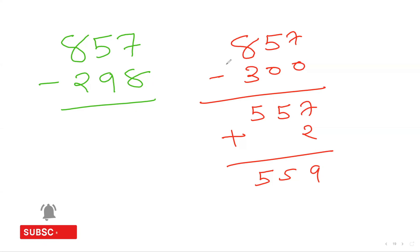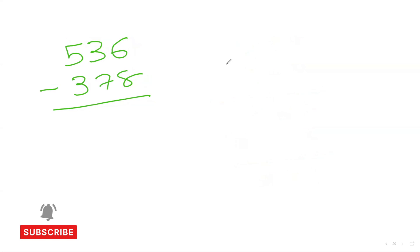Now a little bit more challenging question, but once you know this you'll be doing amazingly well. For 536 minus 378, I can minus 300, then 70, then 8, or I can just minus 400. Since 378 is closer to 400, I'll do 536 minus 400, which gives me 136.